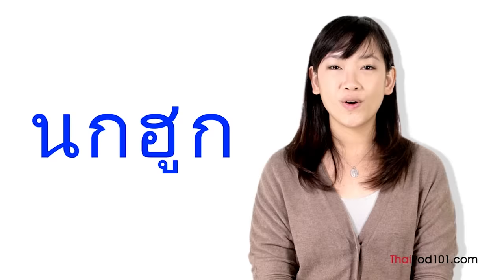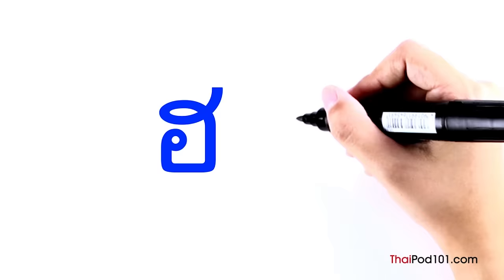The first low-class consonant is Tho-tahan — tahan means soldier. The sound of Tho-tahan as an initial letter is T like the T in 'top' — there should be a puff of air coming out of your mouth. When it's the final consonant, Tho-tahan makes a T stop just like Do-dek. Tho-tahan looks like the shape of a hill, so you can remember it by thinking of a soldier standing on top of a hill. To write it: start with the head, draw a line going down, then make an arch going to the right.